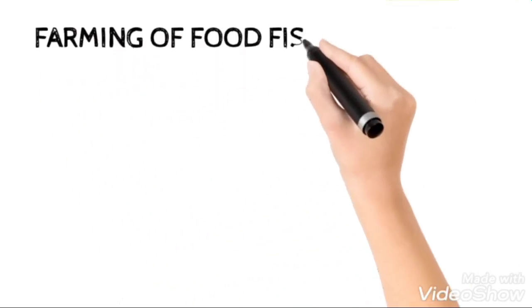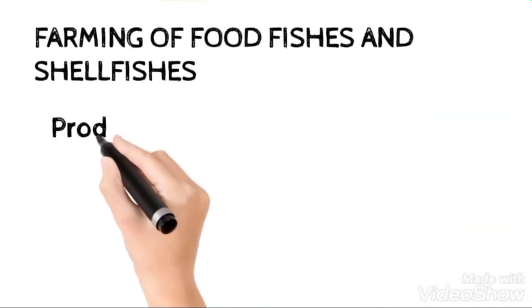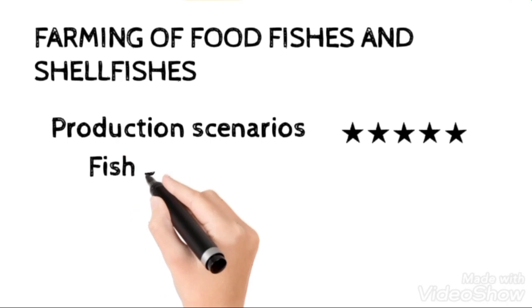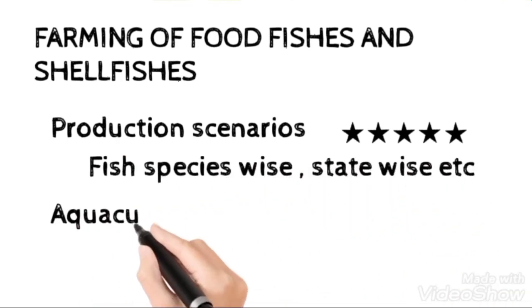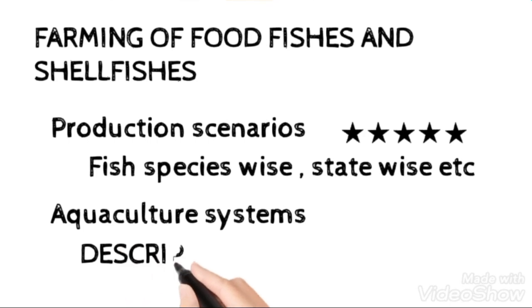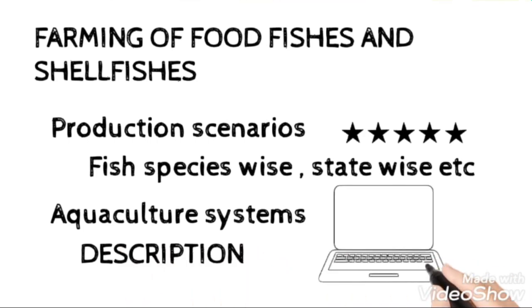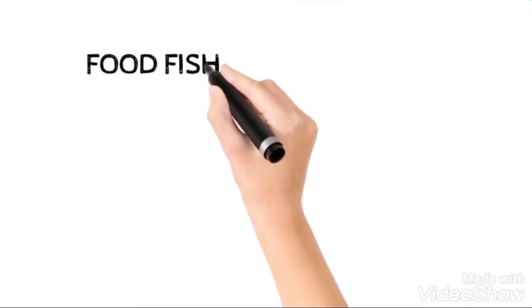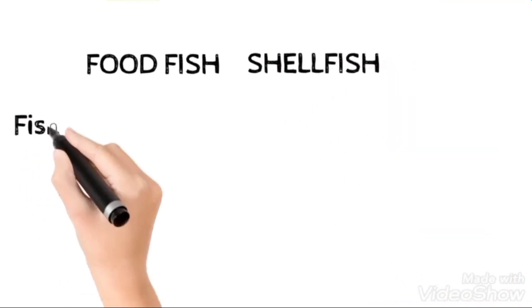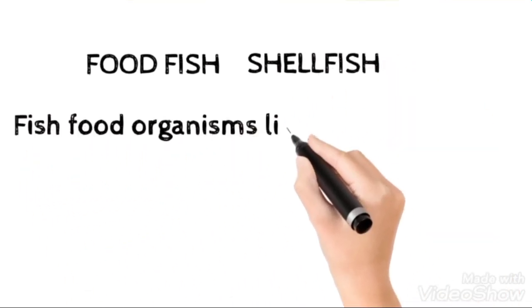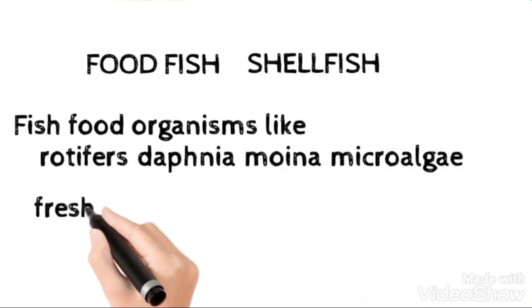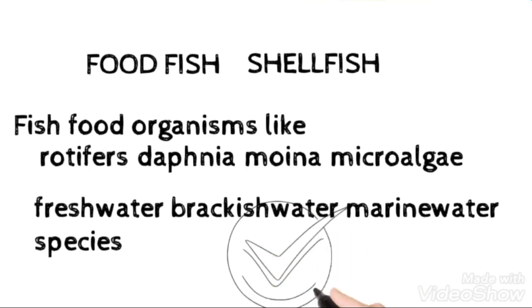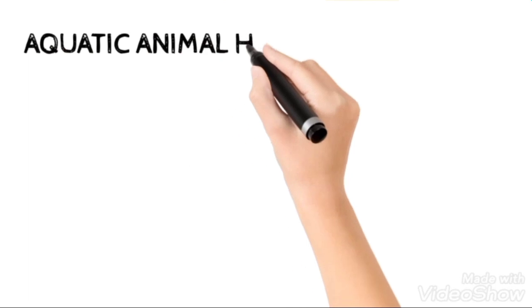For Farming of Food Fishes and Shellfishes, we need to be very much clear with the current and previous production scenarios - fish species-wise, state-wise, country-wise, etc. And then aquaculture systems being a most important one-word concept. If you need this video, I will give the link in the description so that you could refer that. Then we need to have a clear-cut idea based on the food fish and shellfish and the fish food organisms like rotifers, Daphnia, Moina culture periods and certain characteristics. Then you need to clearly distinguish them - freshwater, brackish, marine water, so that will be direct questions on that.